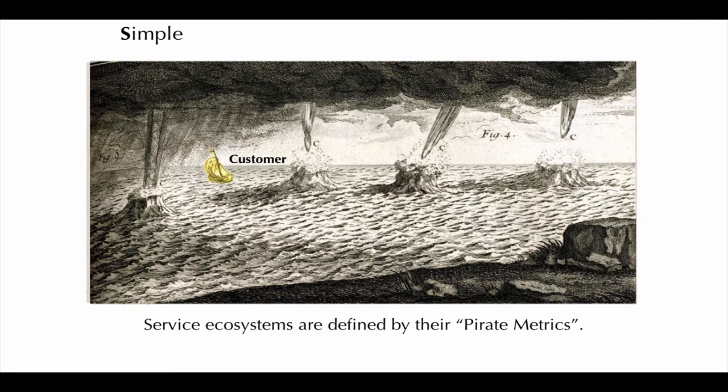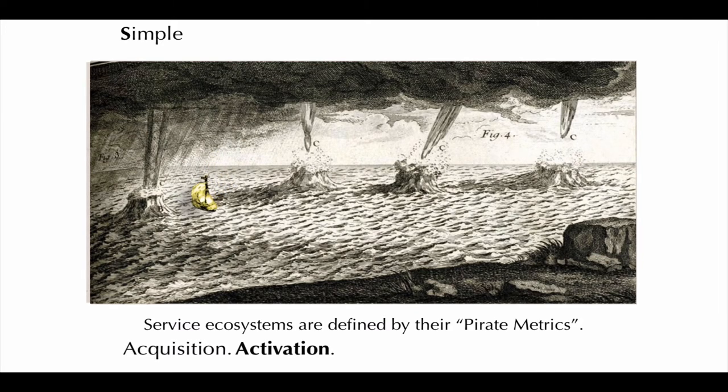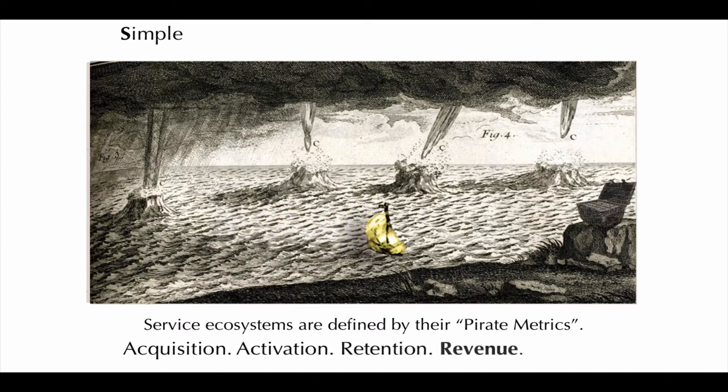The first of these is acquisition. You have to be able to bring customers into your ecosystem. Activation is a value stream that causes the customer to identify themselves, preferably including their credit card details. Retention is a value stream that keeps the customer in the ecosystem. Revenue is how you get paid, but not necessarily by the people who you think of as your customers.